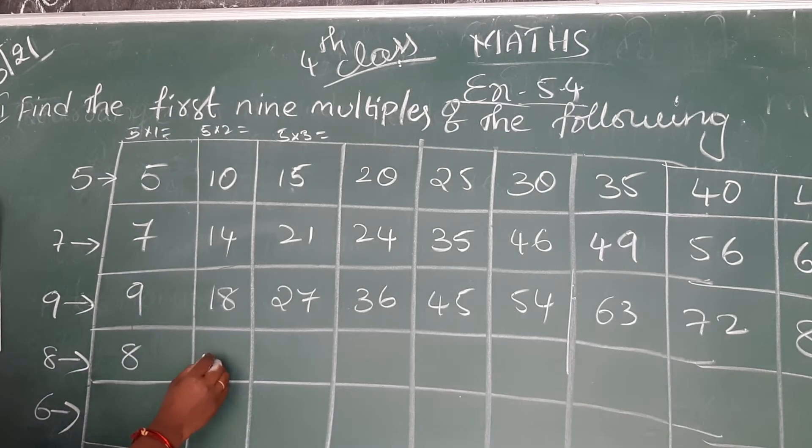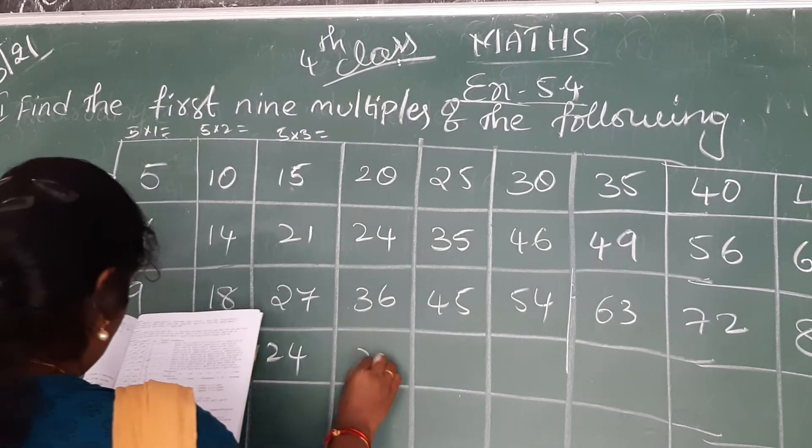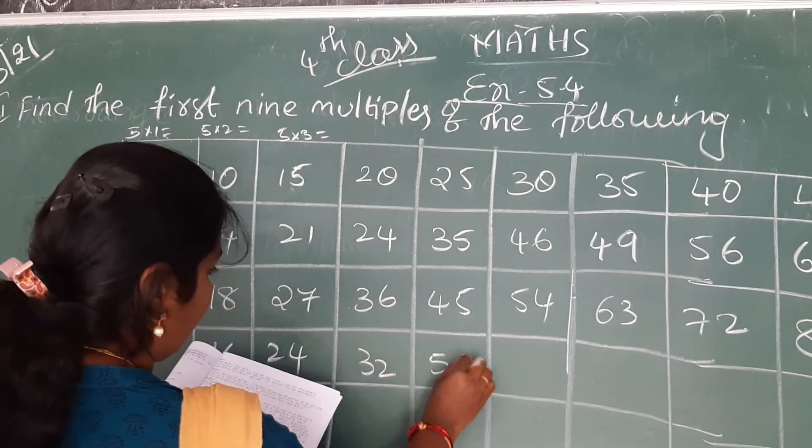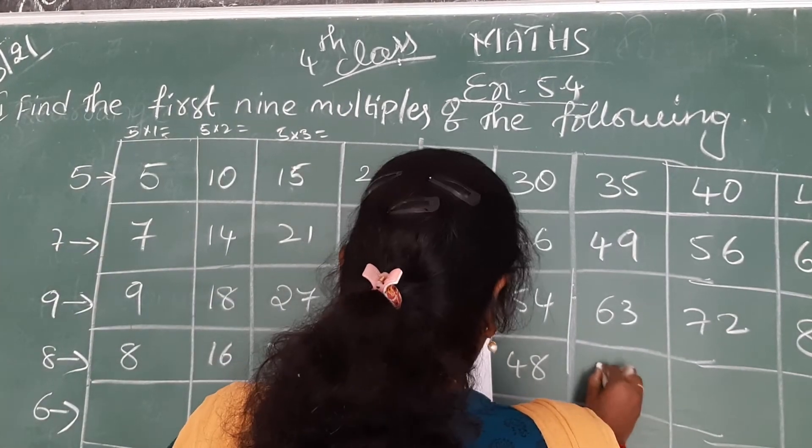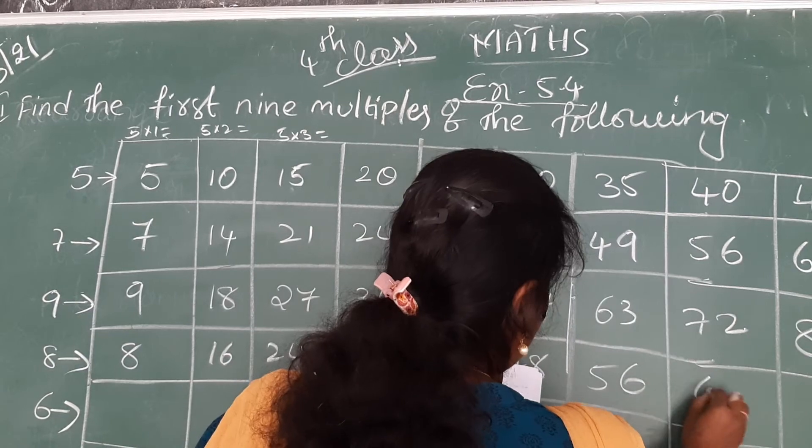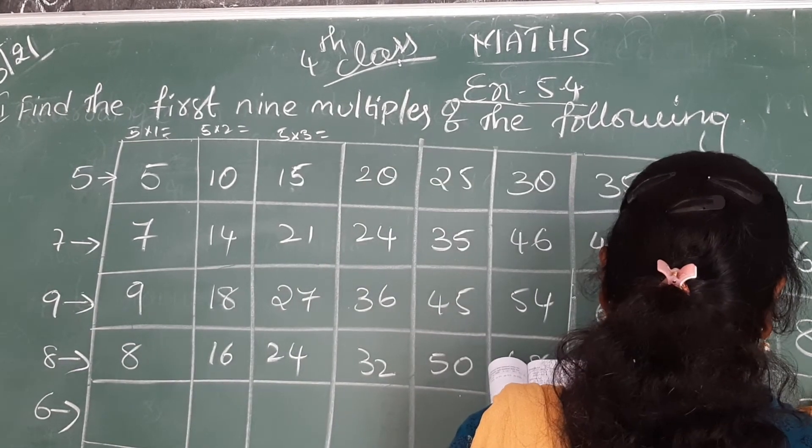8 ones are 8. 8 twos are 16. 8 threes are 24. 8 fours are 32. 8 fives are 40. 8 sixes are 48. 8 sevens are 56. 8 eights are 64. 8 nines are 72.